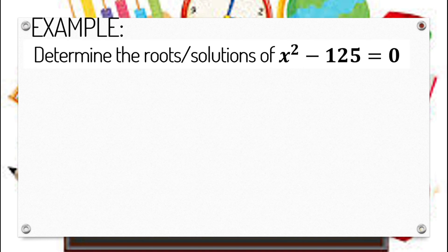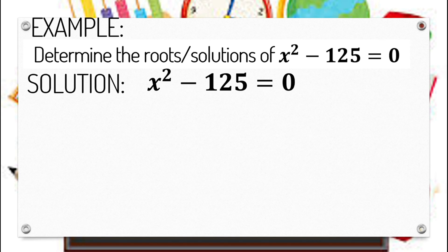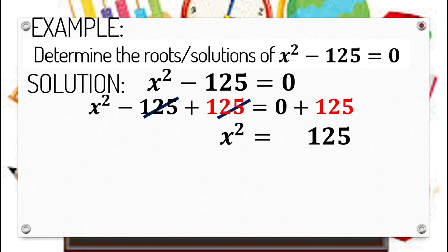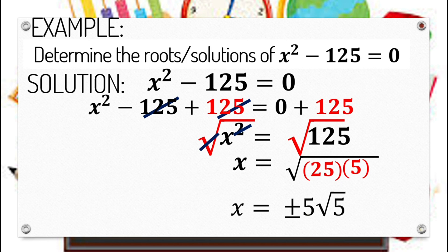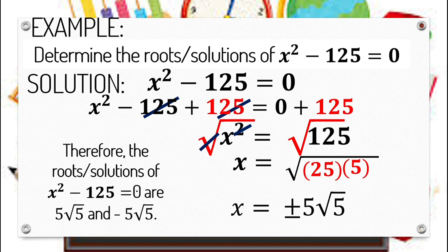Let's determine the roots or solutions of x squared minus 125 equals 0. We transpose negative 125 to the right side using the addition property of equality, so x squared equals 125. We apply extracting square roots. Unlike our previous examples, 125 is not a perfect square. Its factors are 25 and 5, where 25 is a perfect square and 5 is not. So we simplify: square root of 25 gives positive negative 5, then copy the radical square root of 5. Therefore, the roots are 5 square root of 5 and negative 5 square root of 5.